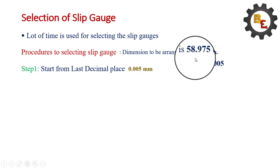Now, we have to reduce this from the main dimension. 58.975 minus 1.005. The remaining value is 57.970. The last digit is changed to 0.